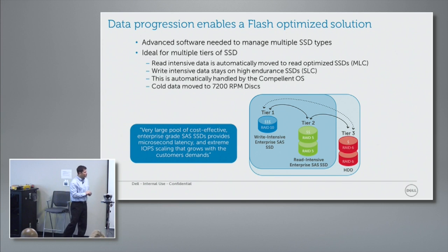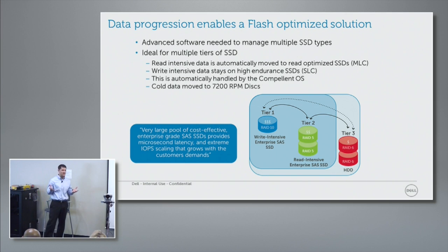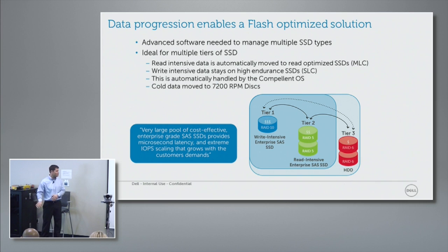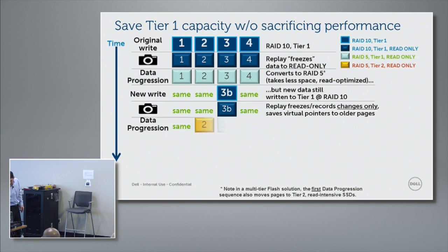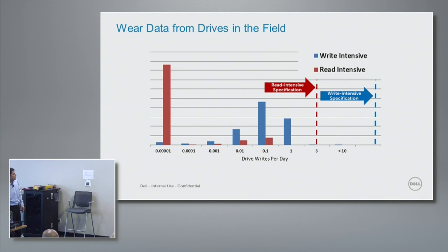We have tier three down there — shown in a different color — because we do want to keep emphasizing this is our all-flash array solution, but we'll always let customers add hard drives. Whatever they want to use in tier three — 15K, 10K, 7200 — we don't care. We've actually been surprised to see a decent number of customers putting 15K drives into tier three. We expected all 7200 RPM, but for one database application customer they specifically wanted 15K there.